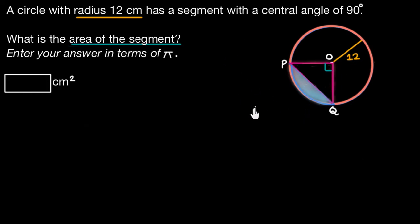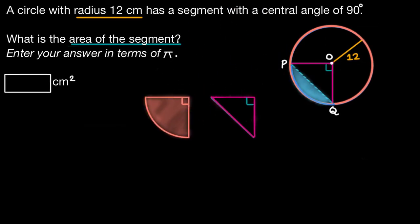So let me just clearly write it out for you. The area of our triangle POQ subtracted from the area of our sector POQ will give us the area of our segment. So why don't you go ahead and figure out the individual areas of this sector and triangle and do it on your own.